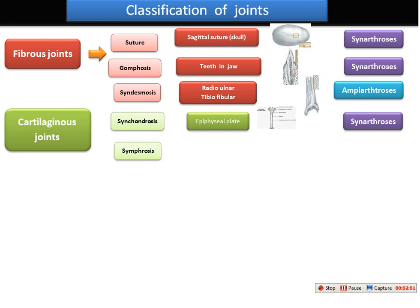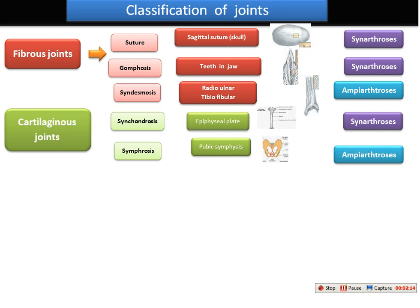The second cartilaginous joint is symphysis, and this is found in the pubic symphysis cartilage — the joint in the pelvis between the two coxal bones. This is also classified according to movement into amphiarthrosis, meaning in this joint we find slight movement.